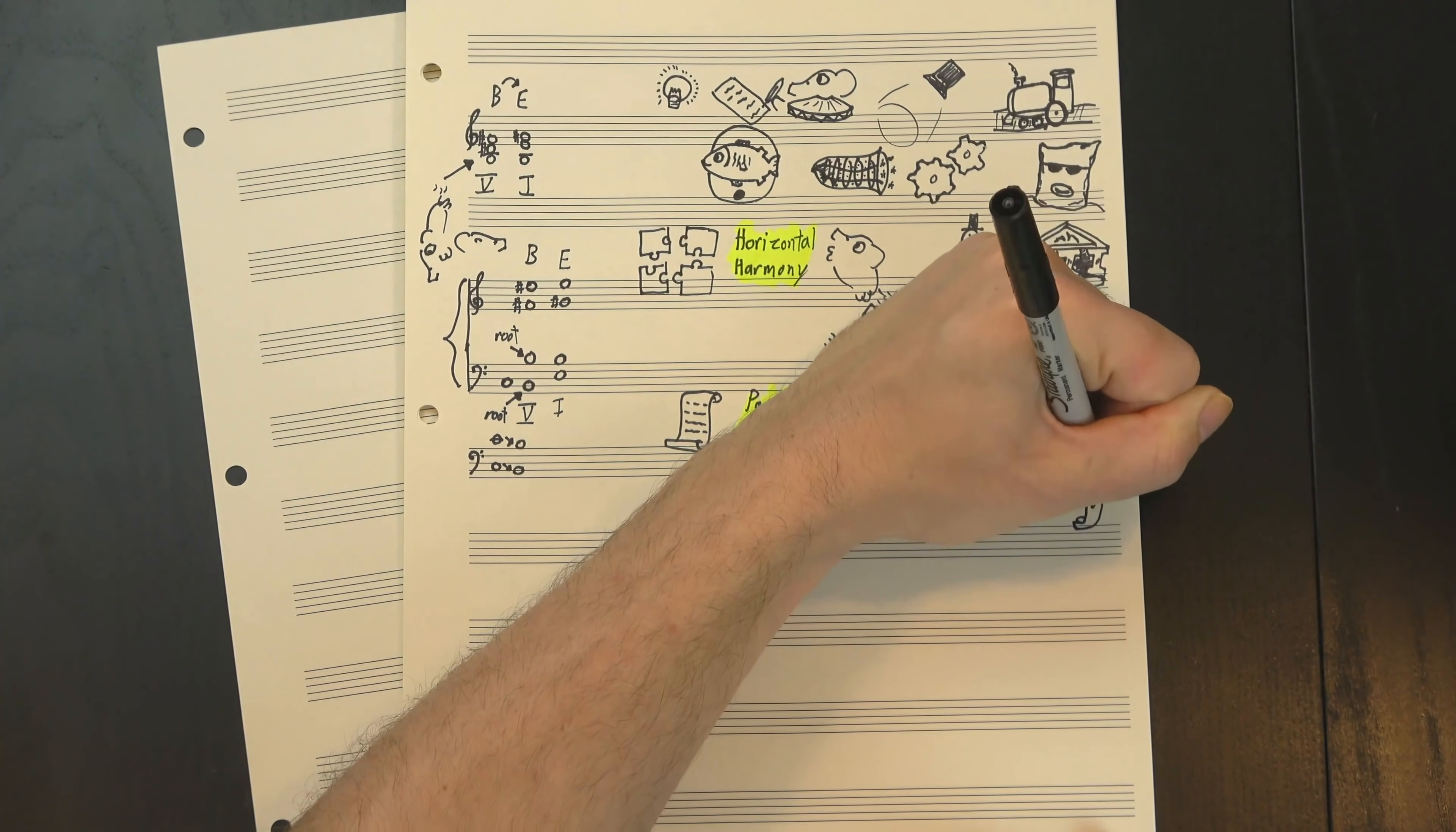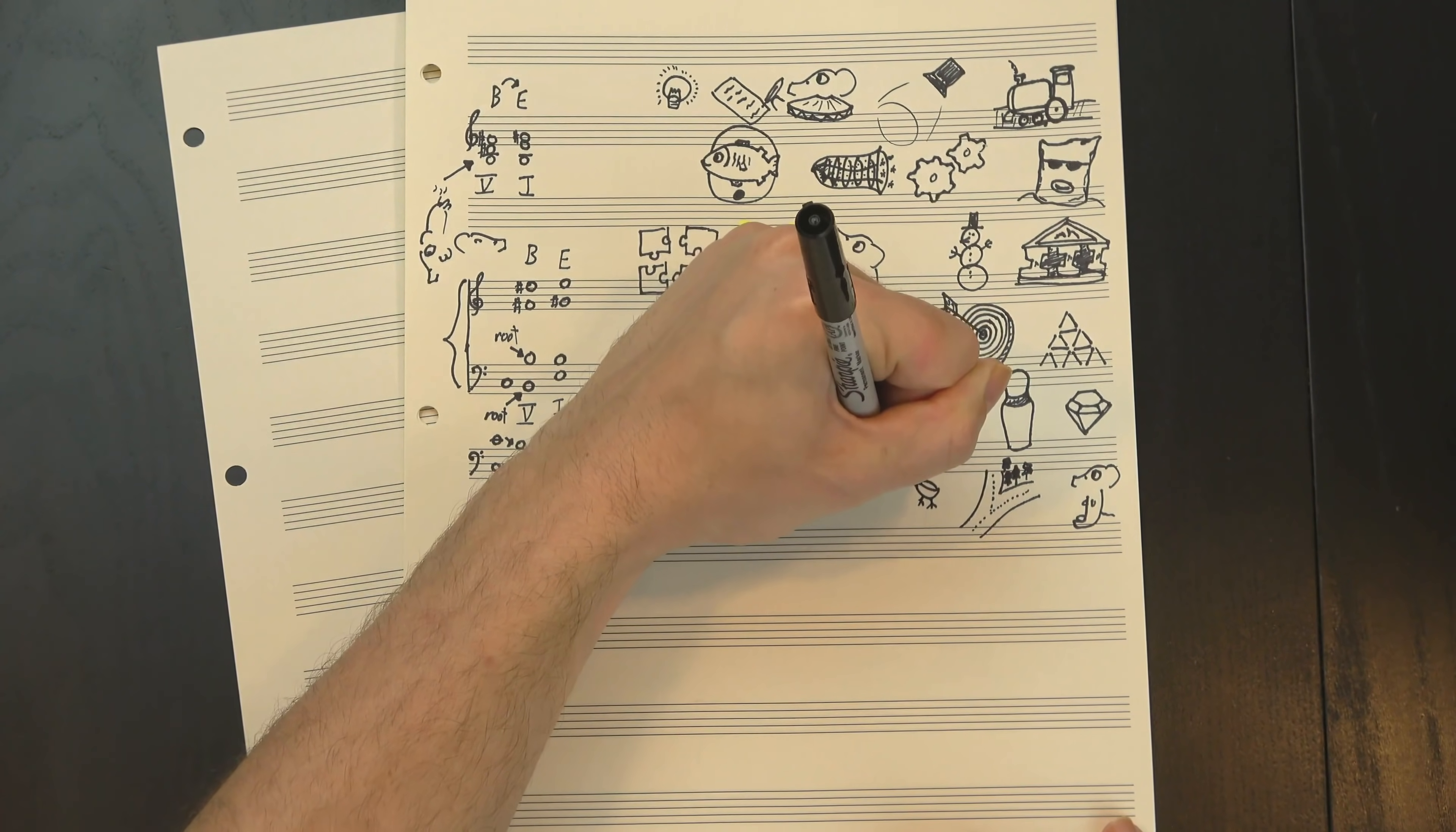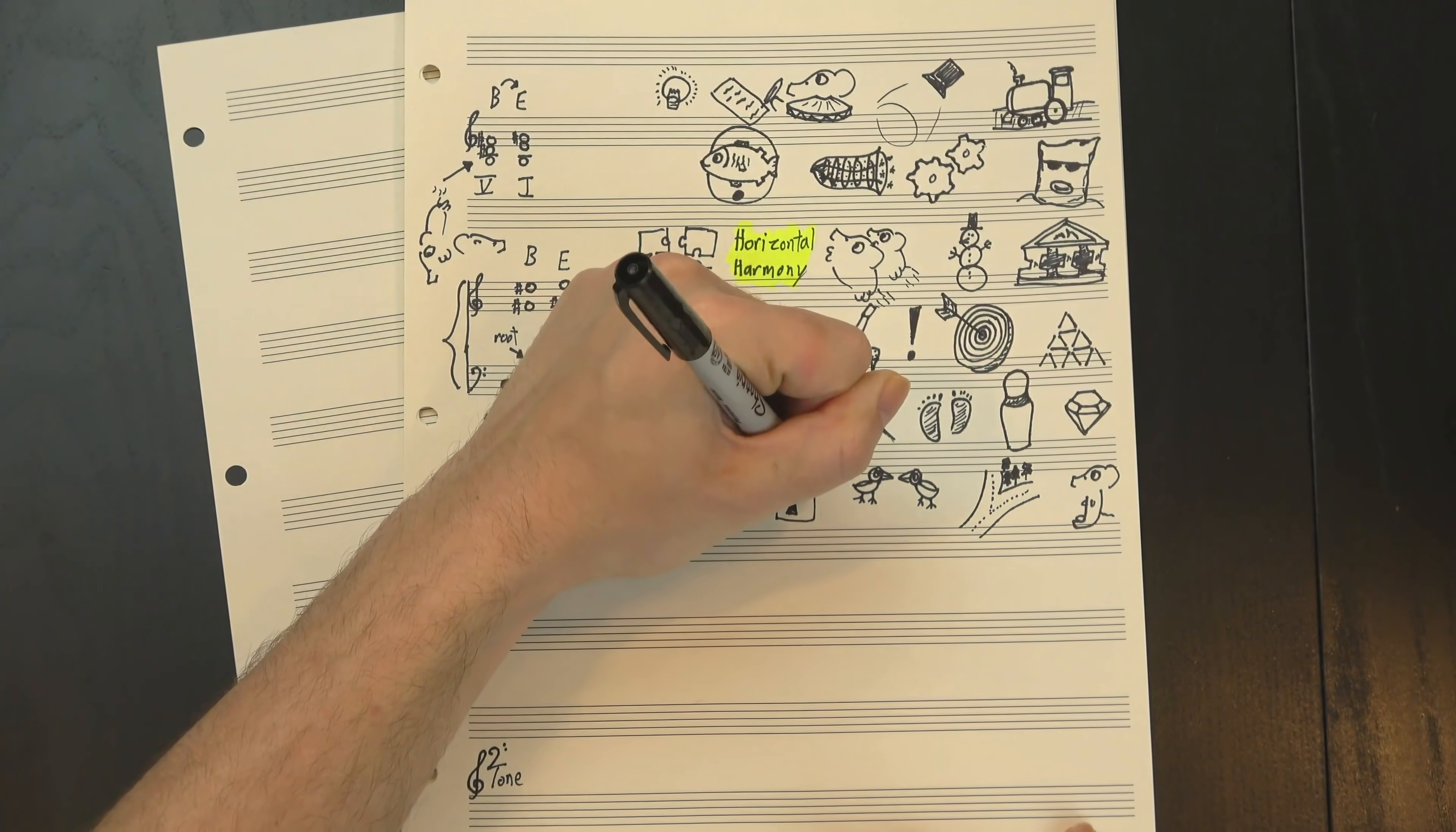Or, well, they can if they both sit still, but if they're moving, they have to move differently. Why? Well, again, the goal of part writing is to make a bunch of independent melodies, but when you have two lines moving together in such a consonant interval, you kinda lose that independence.